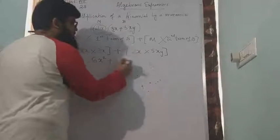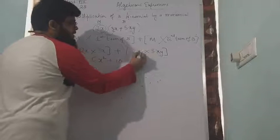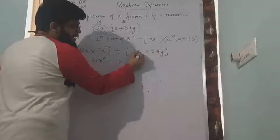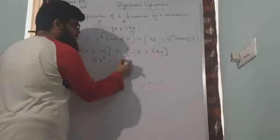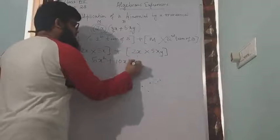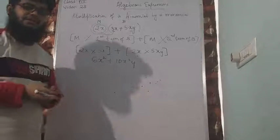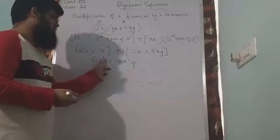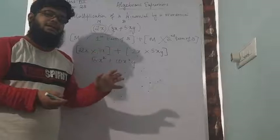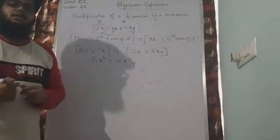Next step. 2 times 5 is 10. I will multiply the numbers. Now I have x and xy remaining. I will multiply x first. x into x will be x square, and y as it is. I can't continue anything after this because 6x square and 10x square y are unlike terms. And unlike terms cannot be added or subtracted.